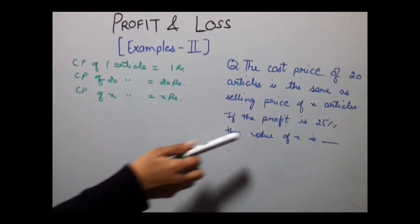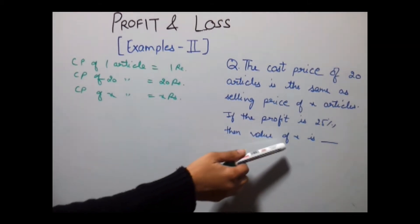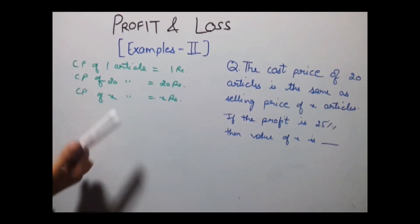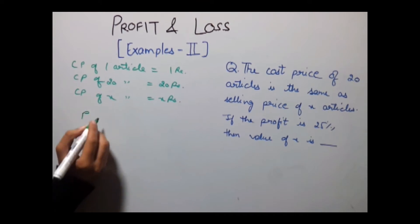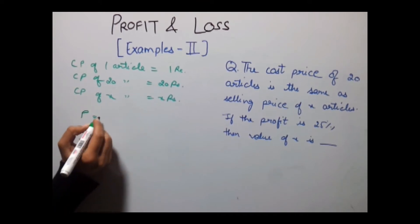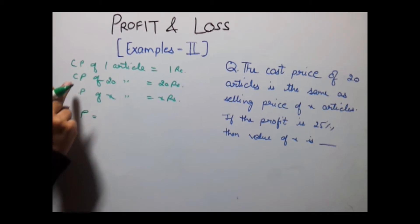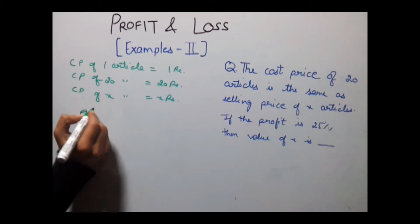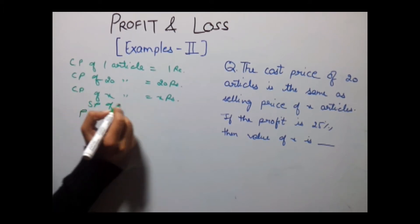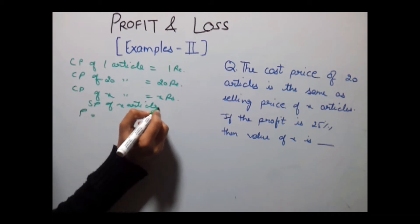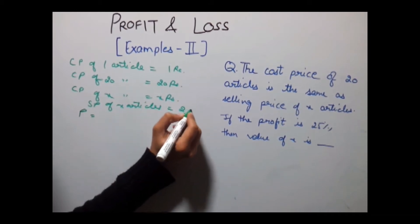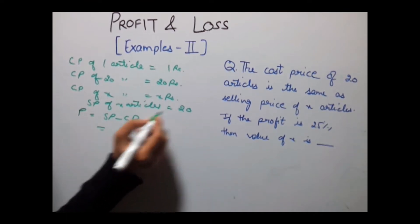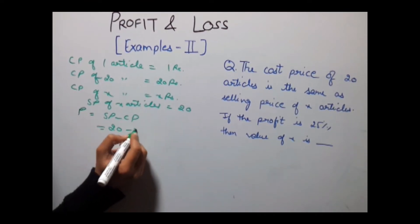Now it is given that profit is 25%. This is the profit percentage. I am sorry, this is the CP and SP of x articles is equal to 20. So profit here would be SP minus CP which is equal to 20 minus x.